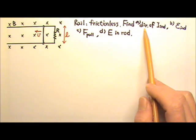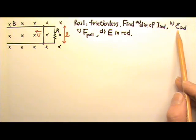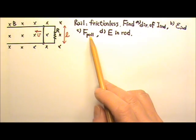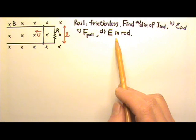Find A, the direction of the induced current in the loop. B, the induced EMF in the loop. C, the force required to pull the conducting bar at a constant speed V. And D, the electric field in the rod.